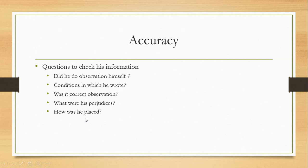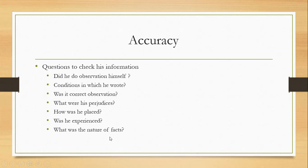The fifth question: how was the author placed — was he near the event when it took place? For example, a battle may have taken place in Delhi but the author was in Agra. The sixth question: was he experienced? News letter writers may not have the experience of a court historian to understand things correctly. The seventh question: what was the nature of the facts? Cabinet secrets or battle strategies are not known to the public, so if a historian has written about them, was he really that close to the king to know such strategies?